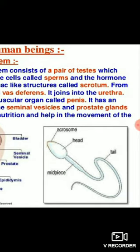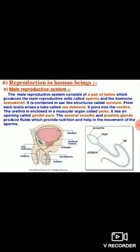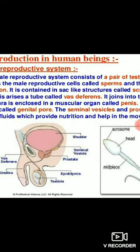Before moving further, let's discuss the structure of the male gamete — the sperm. The male sperm consists of a long tail, a midpiece, a head, and an acrosome. The acrosome contains certain enzymes which help the sperm move into the female genital tract or enter the egg. The tail helps in movement, the midpiece contains many mitochondria which help in energy production, and the head consists of the nucleus.